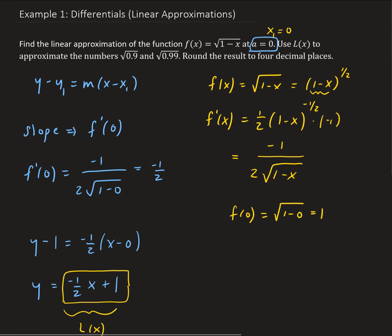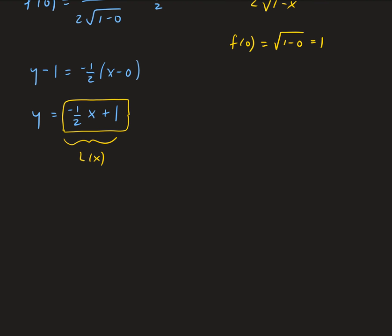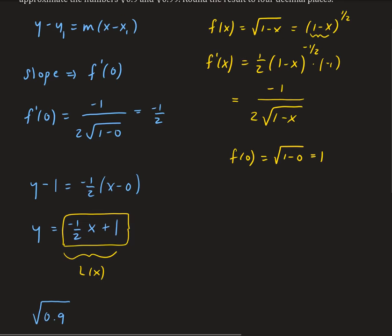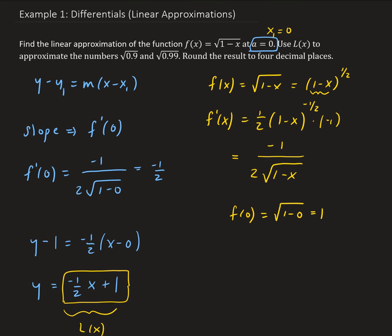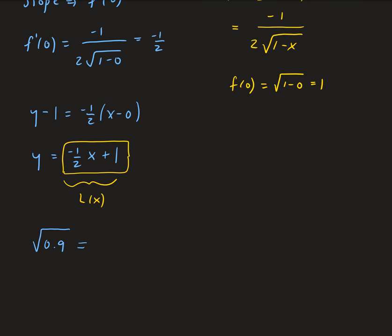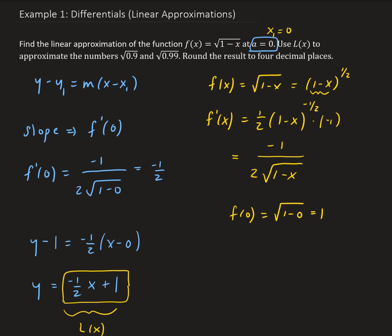Now we want to use this to approximate the square root of 0.9. The way we do this is we write the square root of 0.9 — remembering that we want to use our linear approximation, which is approximating the square root of 1 minus x. So we need to put our square root in that form of 1 minus x. So this is equal to the square root of 1 minus 0.1, and you can see how that now closely resembles our function of the square root of 1 minus x.